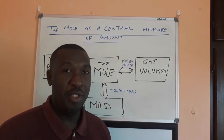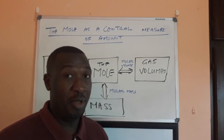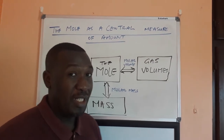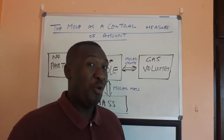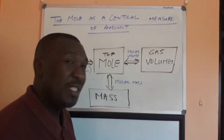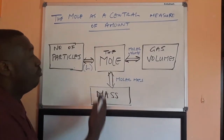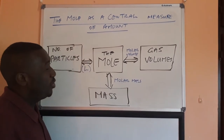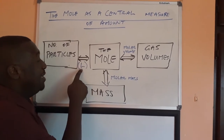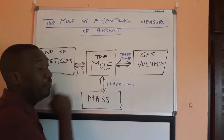In chemistry we measure volume as a way of measuring a mole. We also measure masses, and obviously to count particles directly would be difficult — and that's where we have the mole. Looking at this diagram, the mole is related to numbers of particles, and that relationship is defined by Avogadro's constant L.